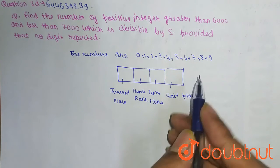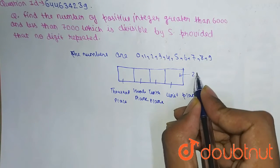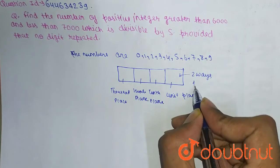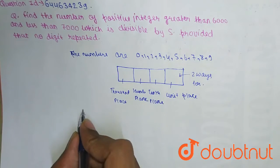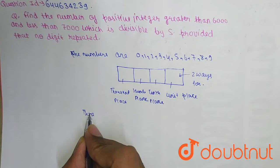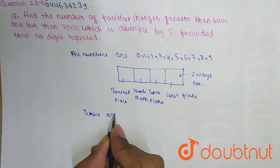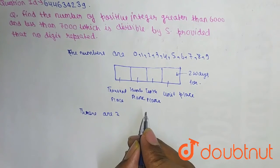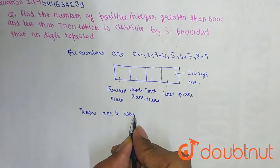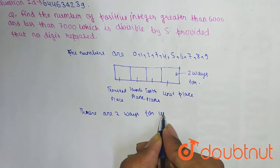So there are two ways for unit place. There are two ways for unit place - either 0 or 5 will come.